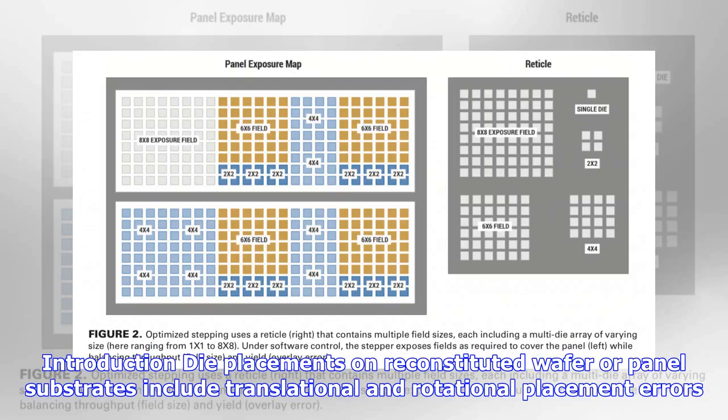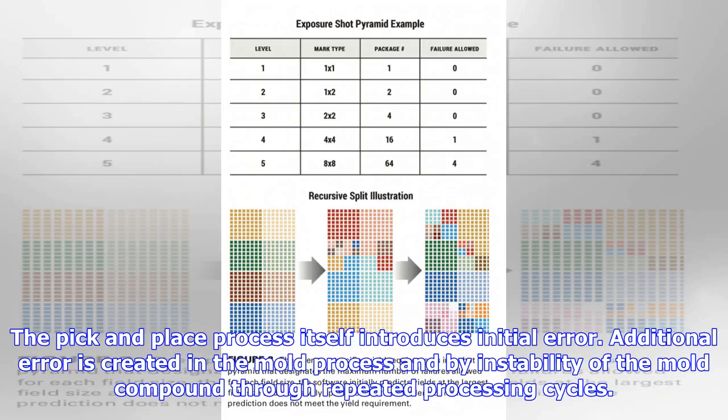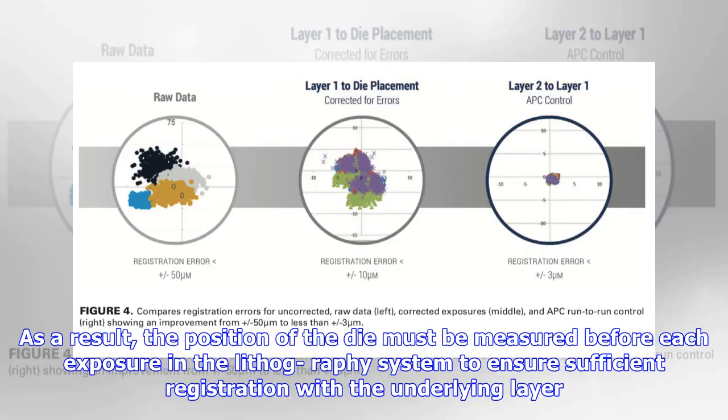Introduction: die placements on reconstituted wafer or panel substrates include translational and rotational placement errors. The pick and place process itself introduces initial error. Additional error is created in the mold process and by instability of the mold compound through repeated processing cycles. As a result, the position of the die must be measured before each exposure in the lithography system to ensure sufficient registration with the underlying layer.